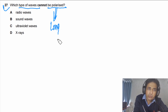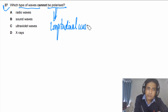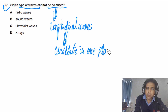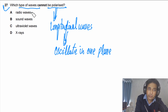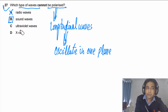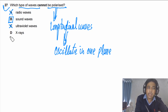Question 27: Which type of waves cannot be polarized? Longitudinal waves cannot be polarized because they oscillate in one plane. Radio waves are transverse — they can be polarized, so not the answer. Sound waves are longitudinal, so they cannot be polarized — the answer is B. Ultraviolet waves and X-rays are both transverse and can be polarized, so they are not the answer.